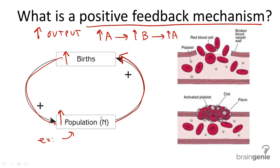Another example in the body relates to blood clotting. When there is a cut in the surface of the skin, chemicals are released and the damaged tissue activates platelets in the blood.